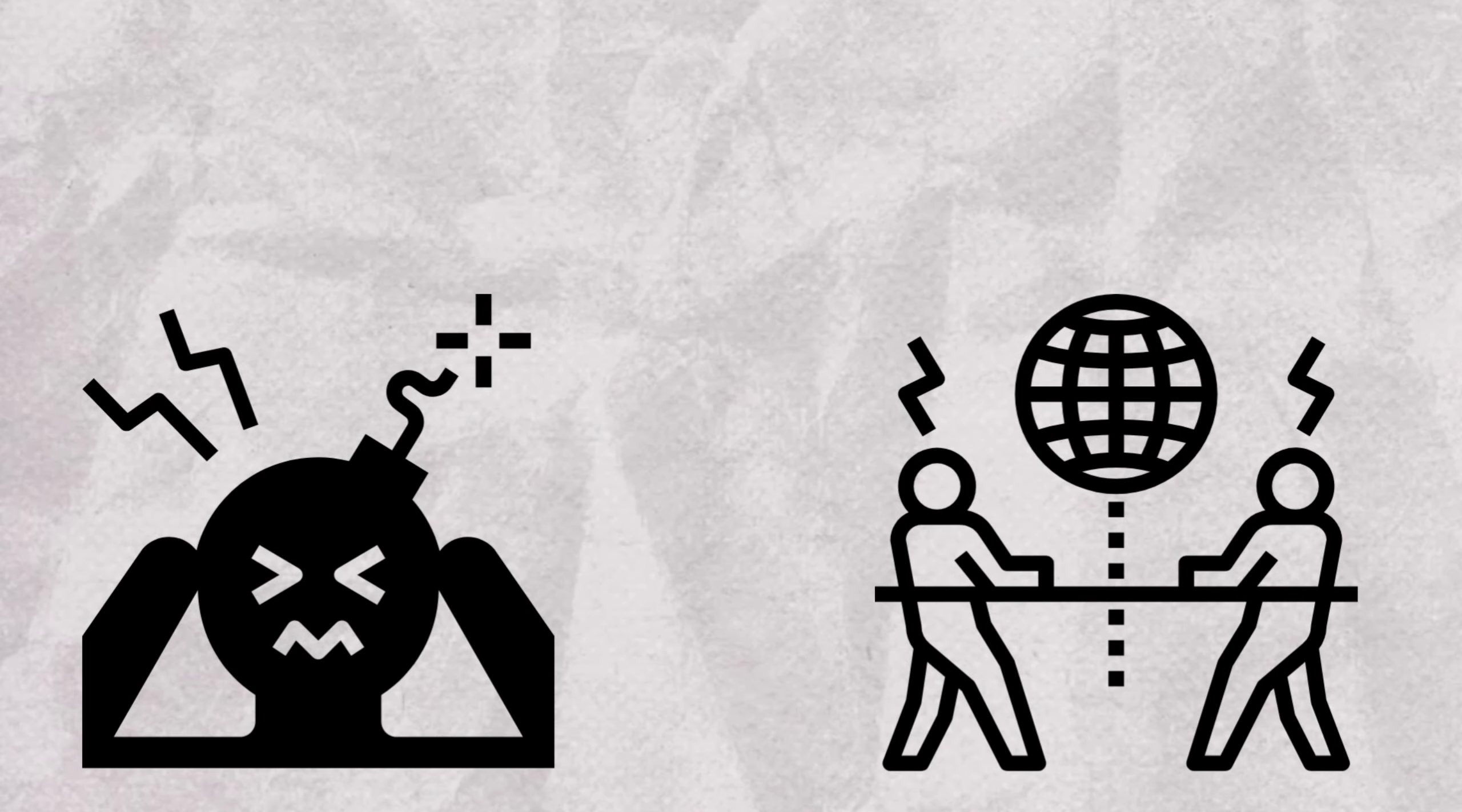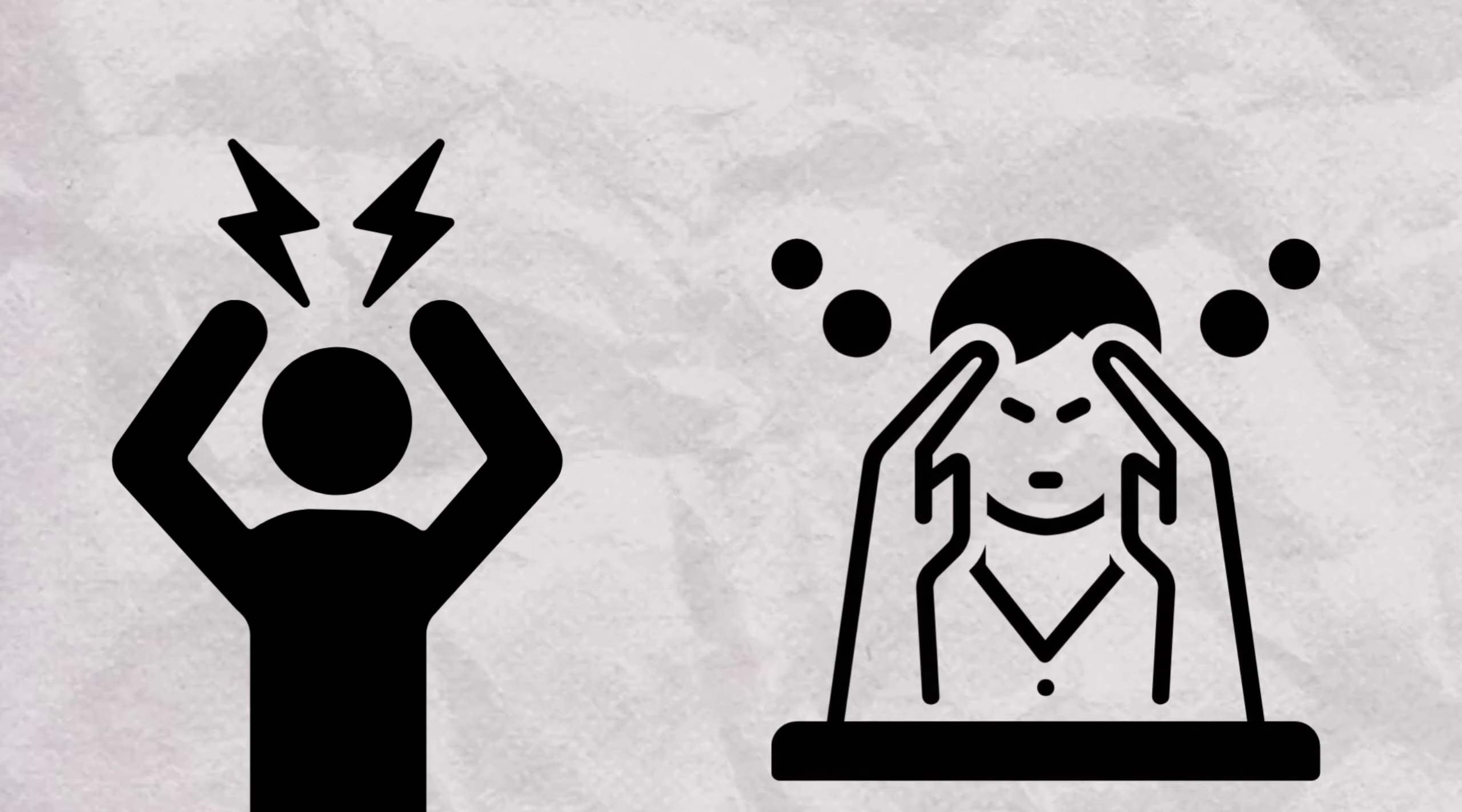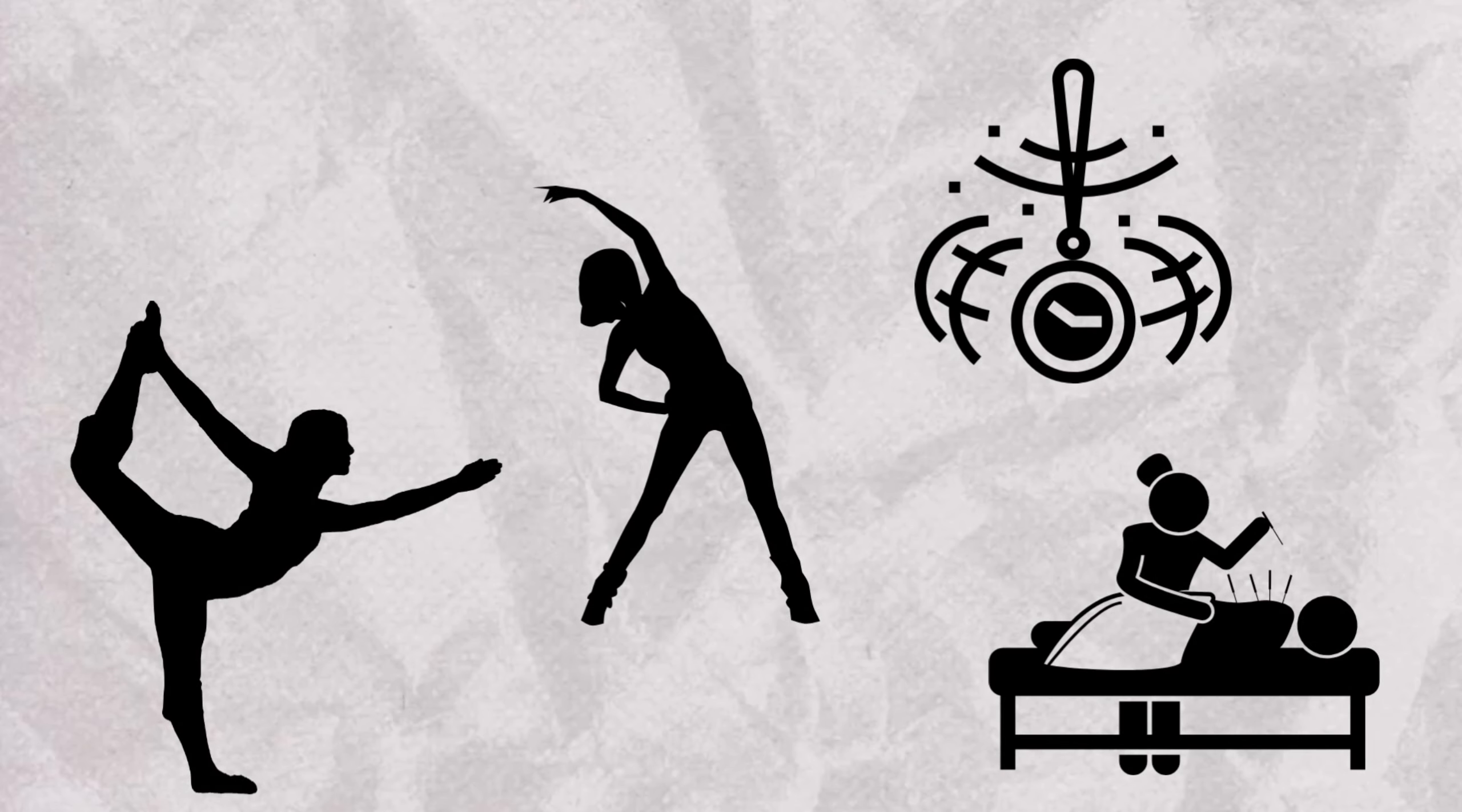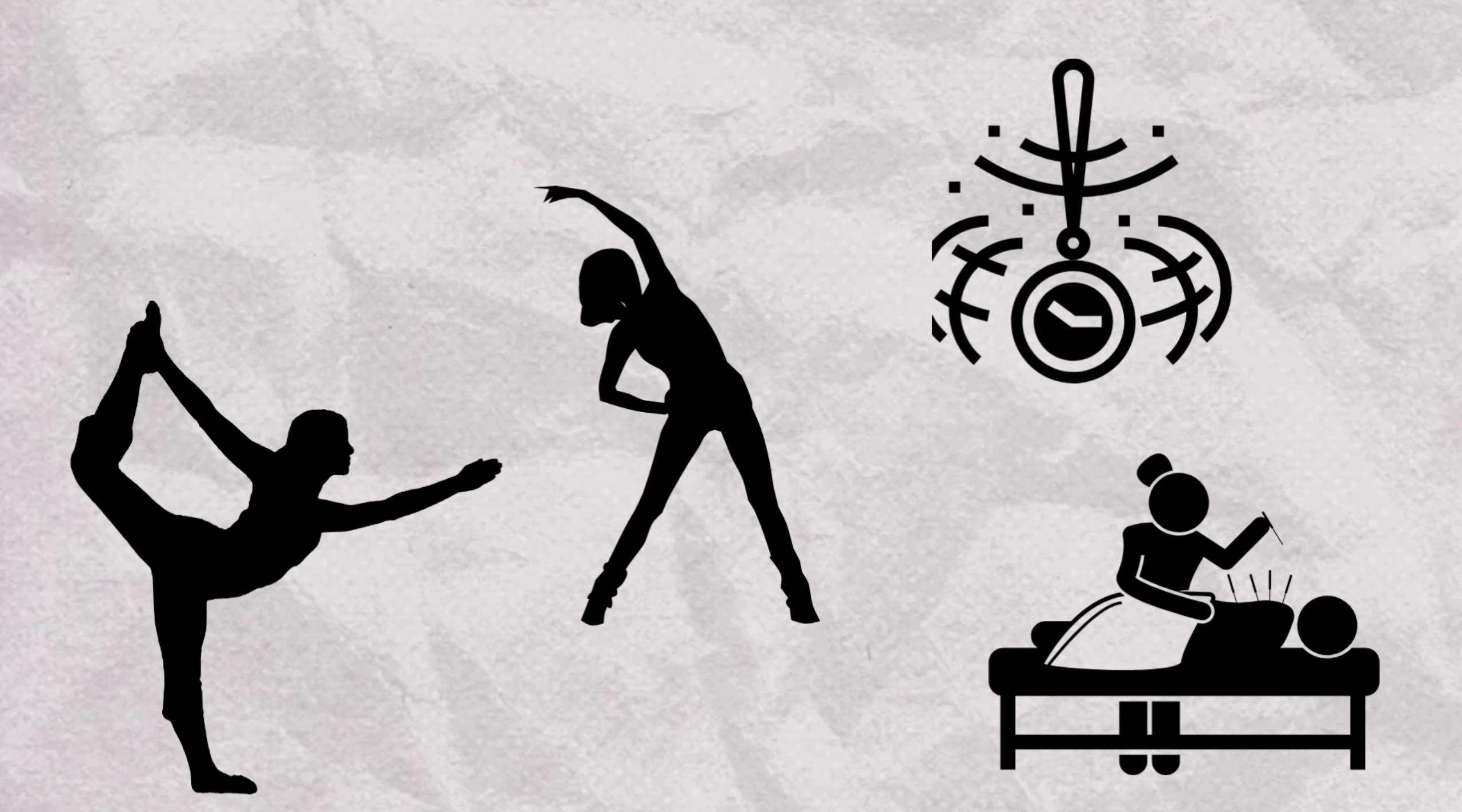This disrupts the connection between the emotion and the compulsion, granting some control. Alternative therapies including yoga, aerobic exercise, acupuncture, biofeedback, and hypnosis may also offer relief.